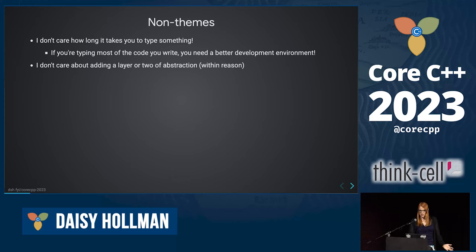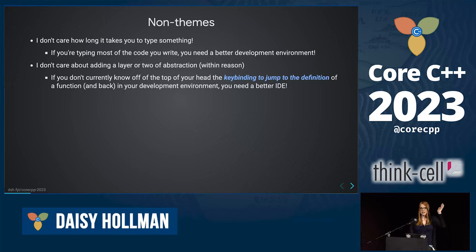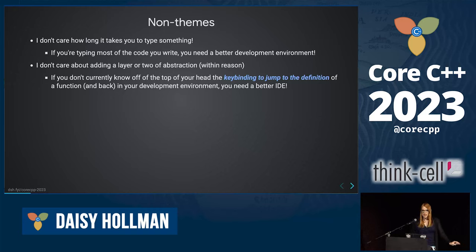I also don't care about adding a layer or two. If you can't think of the key binding to jump to the definition of a function and back while editing, then you need a better IDE. I quite frequently in code review say you need to extract this into a function, you've repeated it four times. Someone will say it reduces the flow of the code and then tells me they use raw Vim or Emacs without a language server. If you're doing that, you're hurting the quality of your code and hurting your co-workers. You should really think about using something more modern.